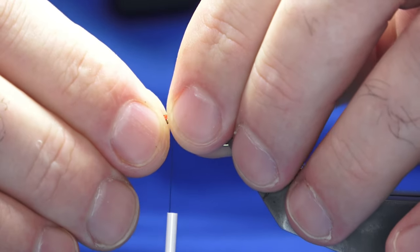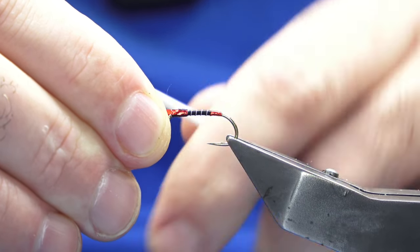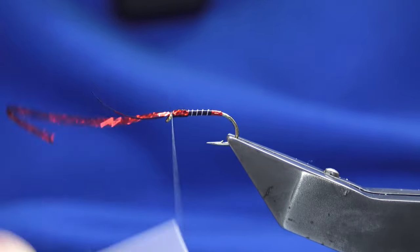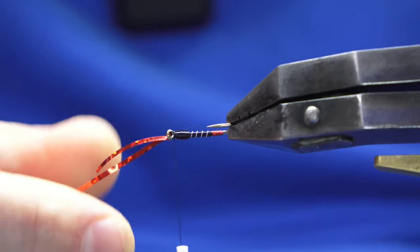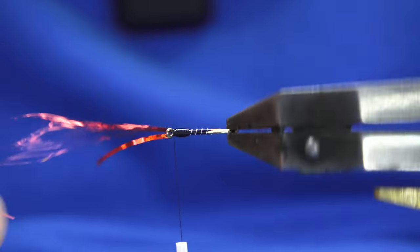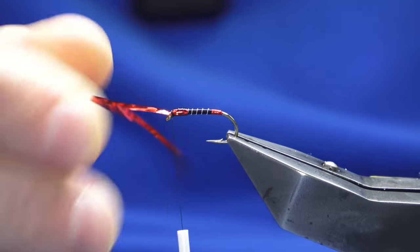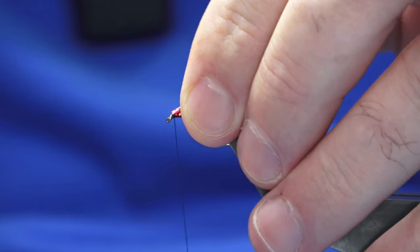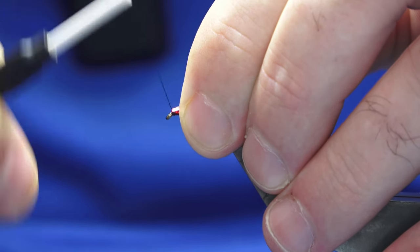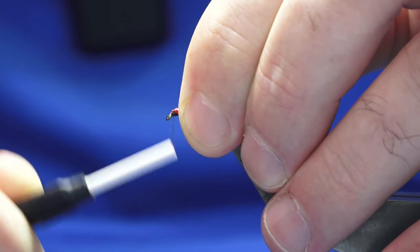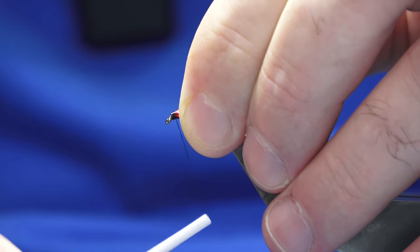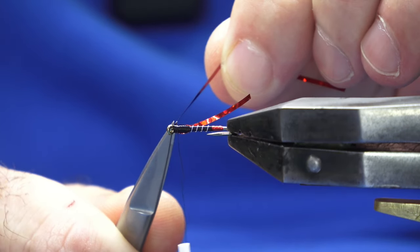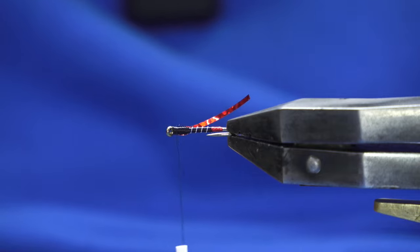Come over with the two pieces of holographic tinsel and follow this around with the thread. Put it nice and tight to get it to hug the hook. Then fold back the holographic material and work the thread up. Trim away the waste. Now you can tie these in all different colors in this style.